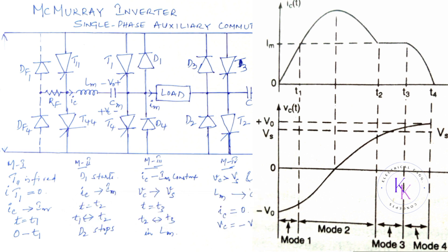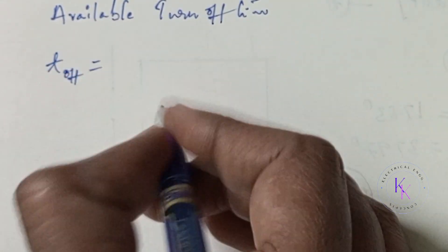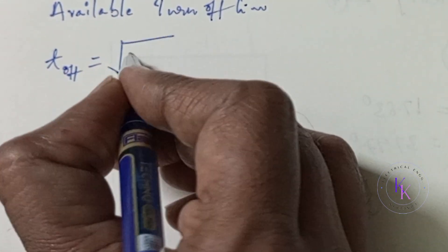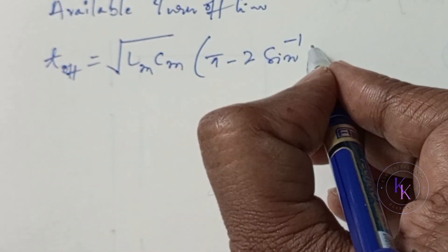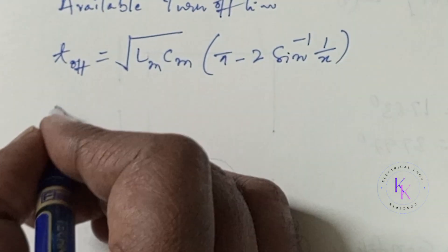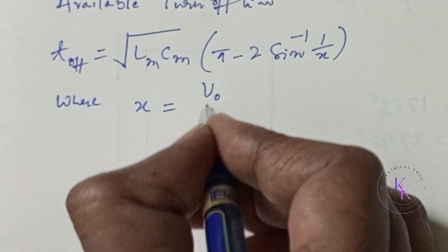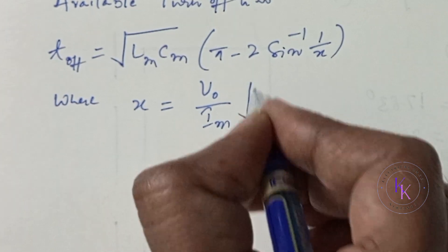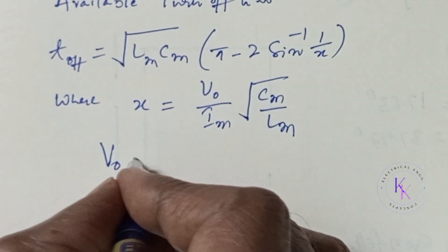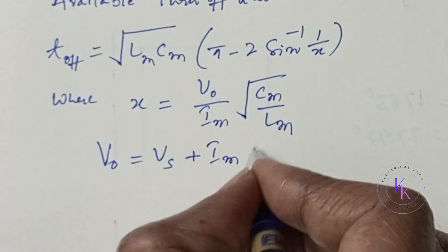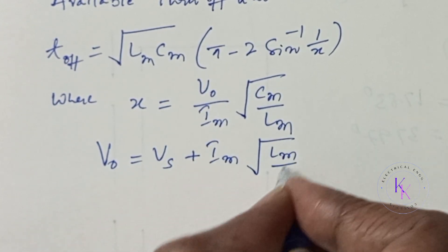All these stages with respect to capacitor voltage and current are shown here in the waveforms. McMurray Inverter available turnoff time T off equals to square root of LM CM pi minus 2 sin inverse of 1 by x where x equals to V0 by IM square root of CM by LM and V0 equals to Vs plus IM square root of LM by CM.